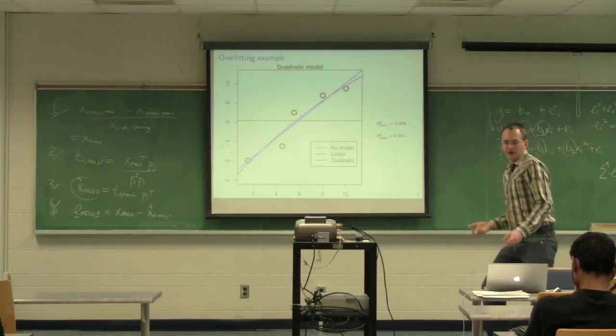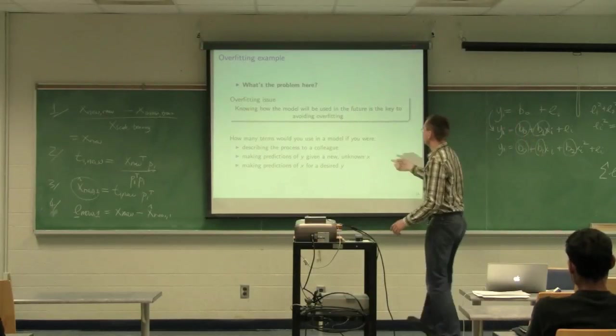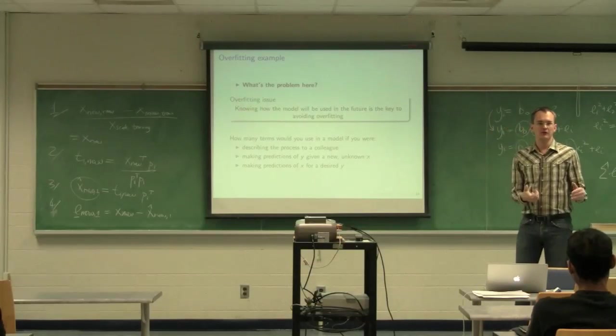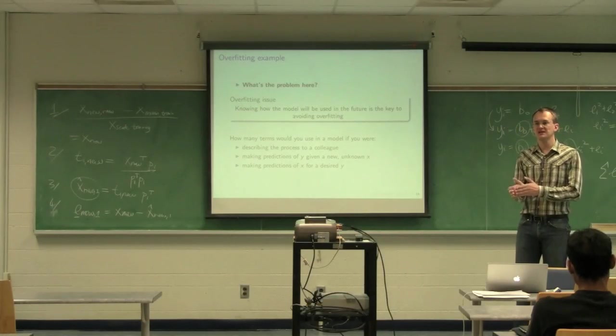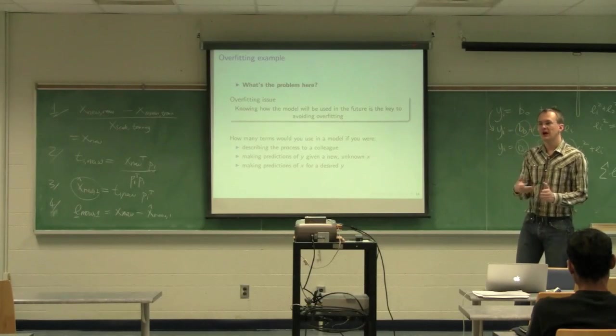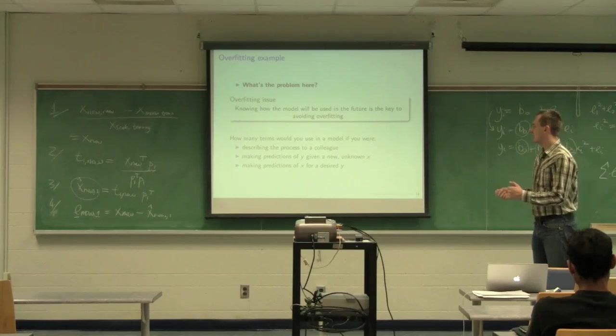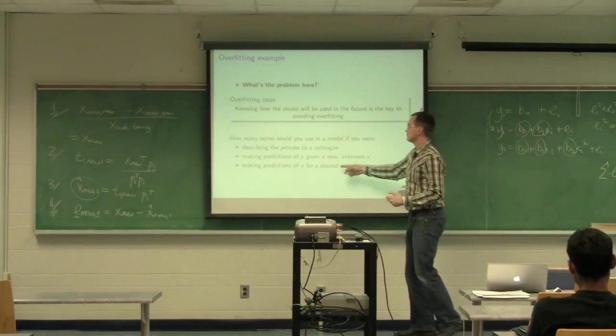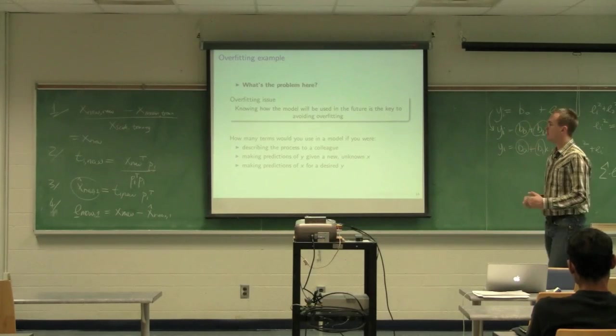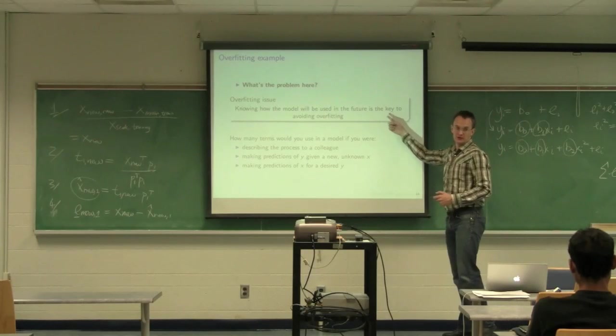So what I'm trying to get across here is that depending on how you use the model really answers your question of where am I overfitting? So in certain cases, let's say you want to do really good predictions. It might not be too bad to go add extra terms. But in other cases, like when you're inverting the model, actually having fewer terms might give you a more stable solution. So overfitting is totally dependent on how you want to use the model in the future.